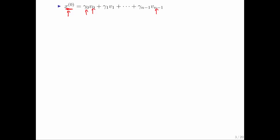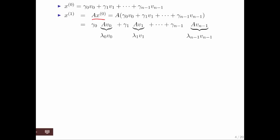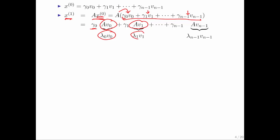We don't know what those coefficients are — indeed, we don't know what these eigenvectors are. But we do know that they exist and that there is a linear combination of those vectors. If we take that first vector and hit it on the left with matrix A, we create x at time 1. A can be distributed inside the linear combination because the gammas are scalars. Then A times v0 is lambda 0 times v0, A times v1 is lambda 1 times v1, and so forth, because we chose these to be eigenvectors.